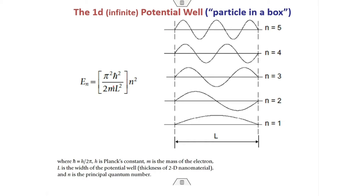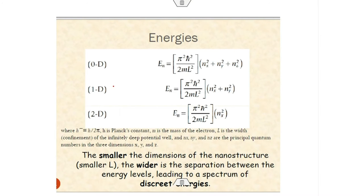In a potential well of length L, different values of n give allowable energy levels: n = 1, 2, 3, 4, 5. This extends to 2D and 3D depending on the system. A zero-dimensional nanoparticle has three-dimensional electronic confinement; a one-dimensional nanoparticle has two-dimensional electronic confinement. The separation between energy levels depends on the dimension L of the nanostructure, leading to a spectrum of discrete energies.